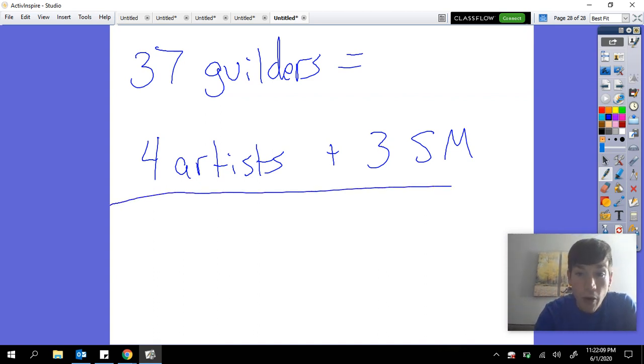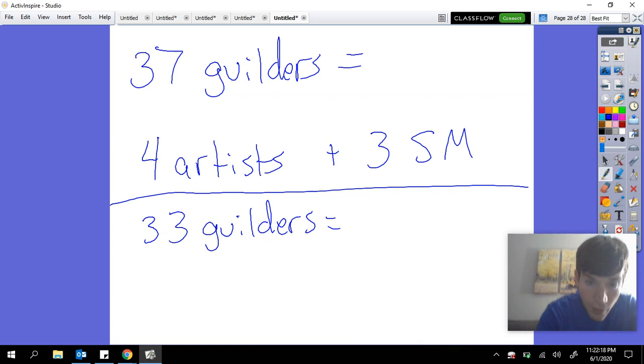Now for 33 guilders, we get 3 artists plus 4 stonemasons.